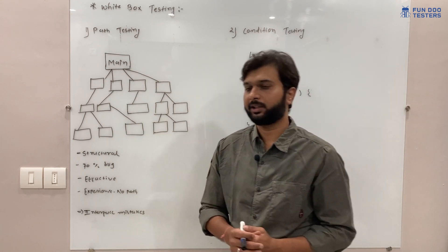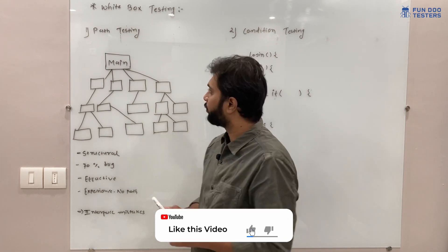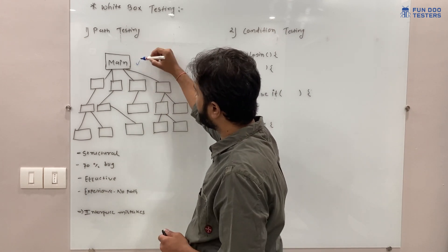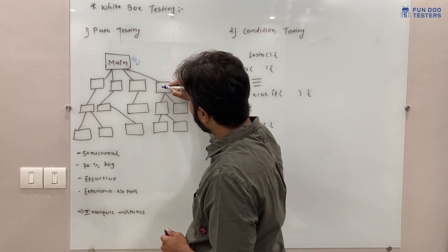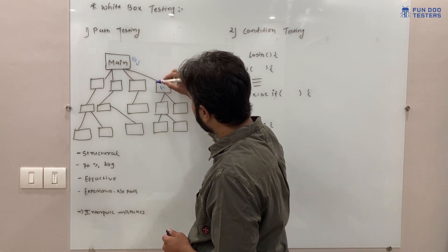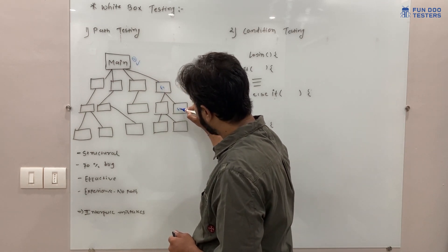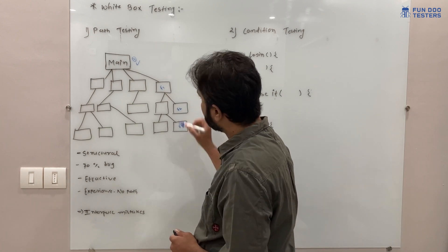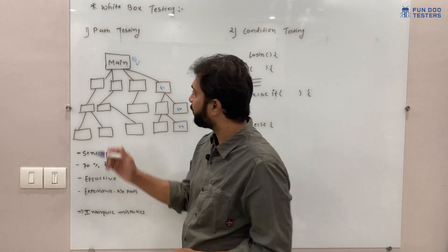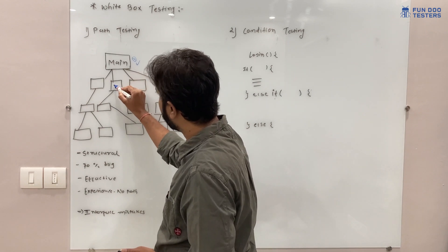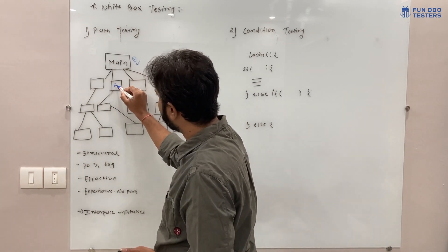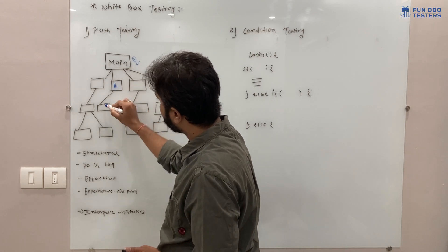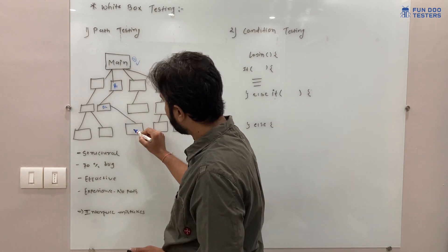In path testing, they are going to map out a path. For example, from the main function, how it navigates: main goes to f1, then f2, then f3. Taking another path, we can have a1, a2, a3 as separate branches.